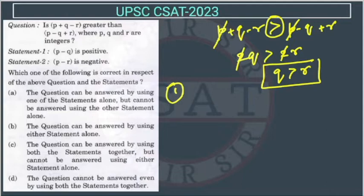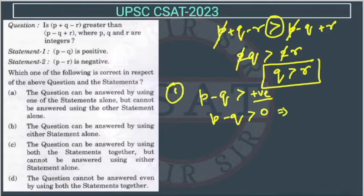Now the first statement: p minus q is positive. So what they have given - p minus q is positive. It means p minus q is greater than 0, so it means p is greater than q. So from this statement we cannot say about q and r relation, because we just know p and q relation. So first statement insufficient.